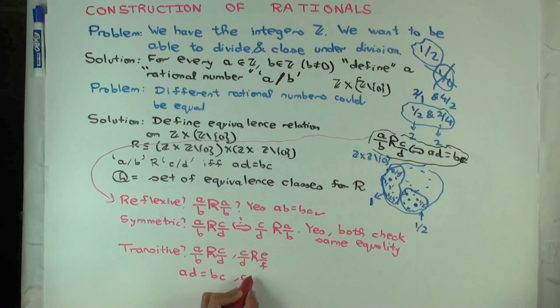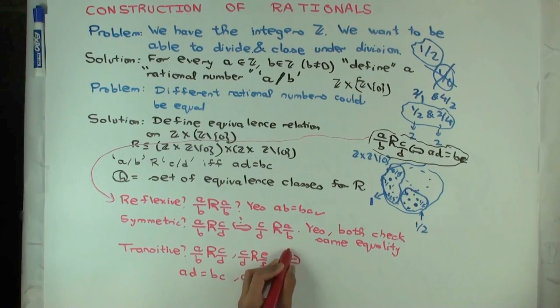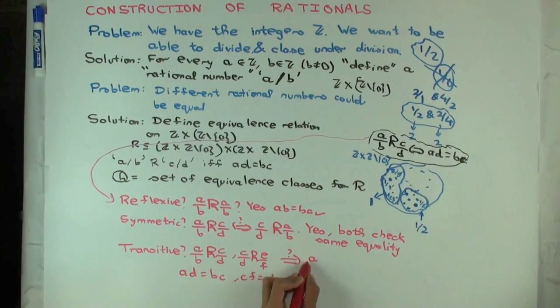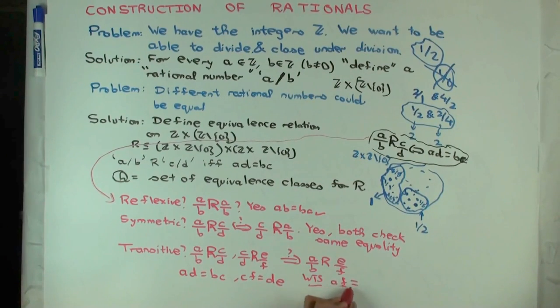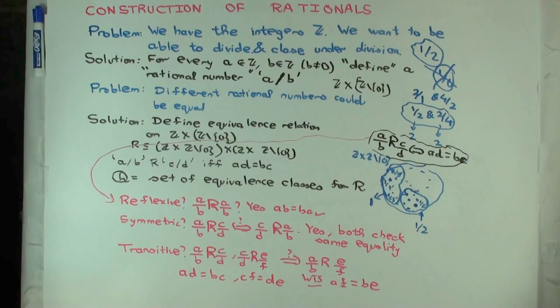What do we need to check? Want to show that A/B R E/F. What does that mean? We want to show that AF equals BE. These are integers. How do you check that? This is not so obvious, right? You have to think a bit.